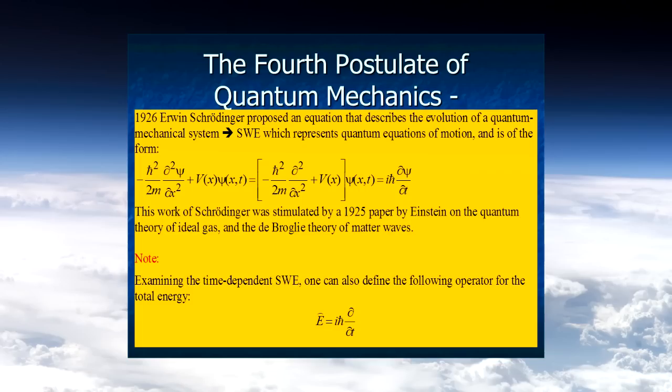The fourth postulate is the canonical equation of quantum mechanics. Newton's second law of mechanics is replaced by the Schrodinger equation — which Schrodinger reportedly derived in two weeks of vacation in the Swiss Alps, earning him a Nobel Prize. It says that the time evolution of a quantum state, a wave function, is given by the action of the Hamiltonian — the energy operator — on that state. Most undergraduate quantum mechanics courses are about solving this equation for different cases.